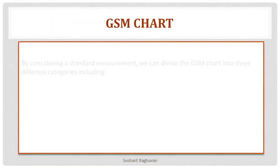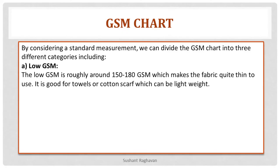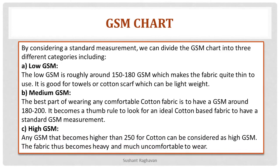GSM chart. By considering a standard measurement, we can divide the GSM chart into three categories. Low GSM: roughly around 150–180 GSM, which makes the fabric quite thin — good for towels or cotton scarves. Medium GSM: the best range for comfortable cotton fabric is around 180–200 GSM, which is the thumb rule for an ideal cotton-based fabric. High GSM: any GSM higher than 250 for cotton is considered high GSM, and the fabric becomes heavy and much less comfortable to wear.